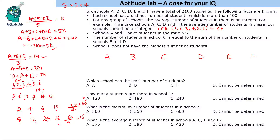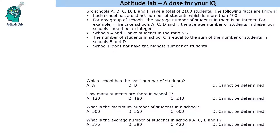Now let us solve the problem. We have 6 schools. It says schools A and E have students in the ratio 5:7, and since all values are multiples of 60, we can write them as 60n.